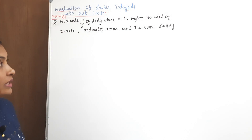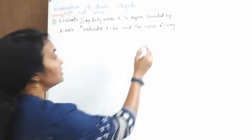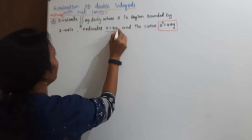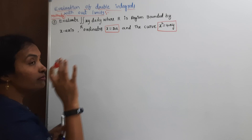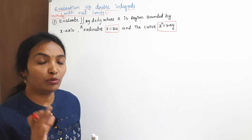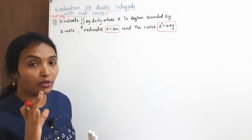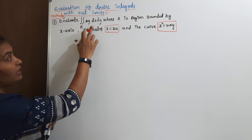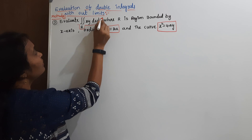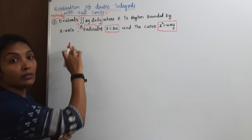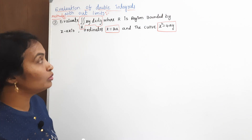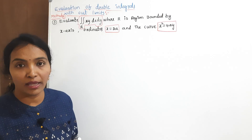This is the fifth lecture in multiple integrals. First, you need to read the problem carefully, then draw the graph. The evaluation of double integral here: R is a region bounded by the x-axis, the ordinate x is equal to 2a, and the curve x squared is equal to 4ay.